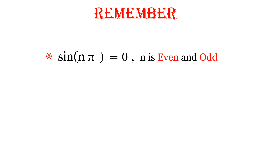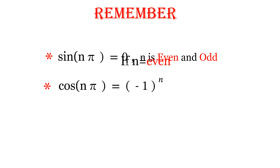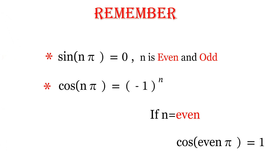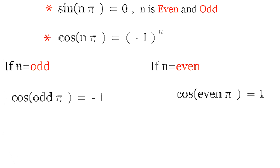Apart from these, please remember this very useful formula: sine(nπ) is always 0, where n can be any integer. So sine(π), sine(2π), sine(3π), sine(4π) — all values are equal to 0. Also, cos(nπ) equals minus 1 raised to n, according to odd or even values. If n is even, such as cos(2π), cos(4π), cos(6π), you get 1. If n is odd, such as cos(π), cos(3π), cos(5π), you get minus 1.